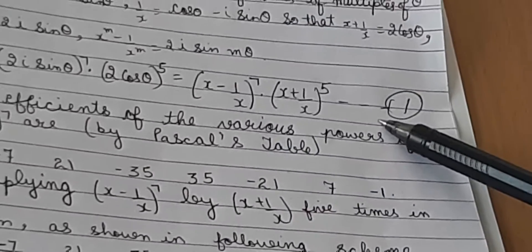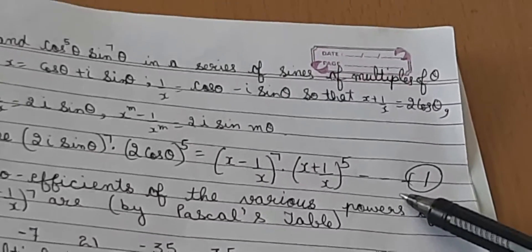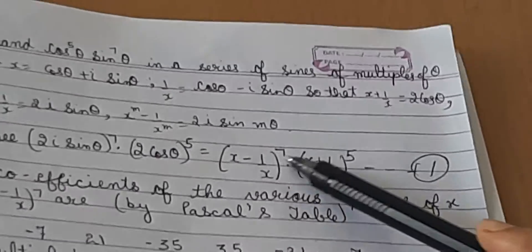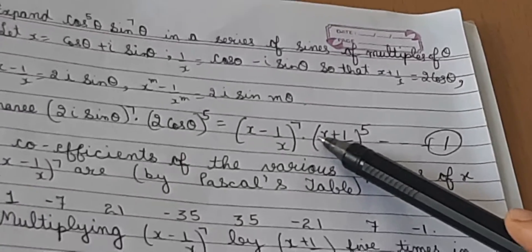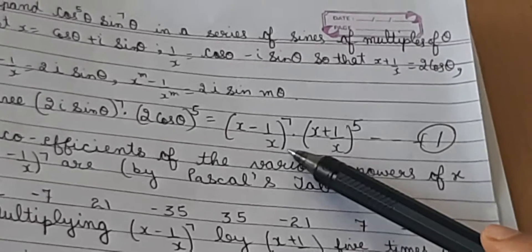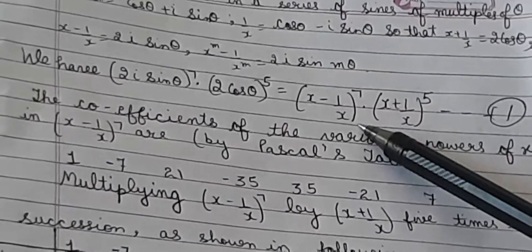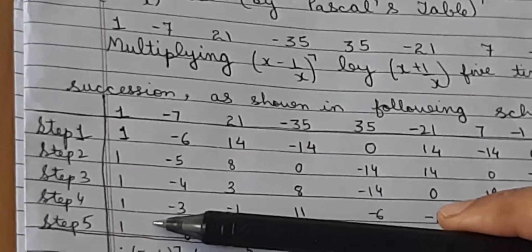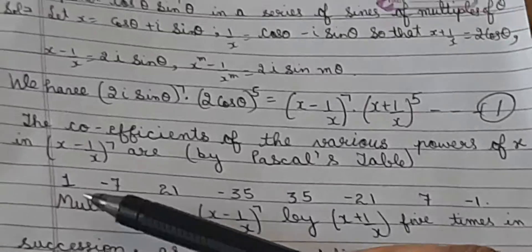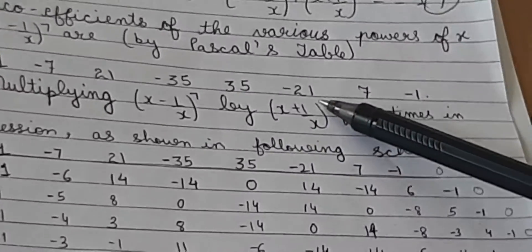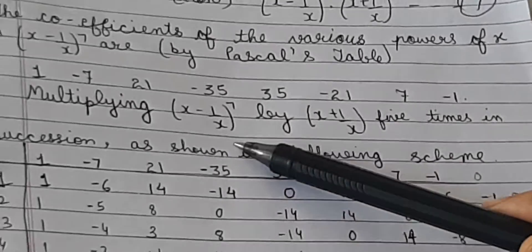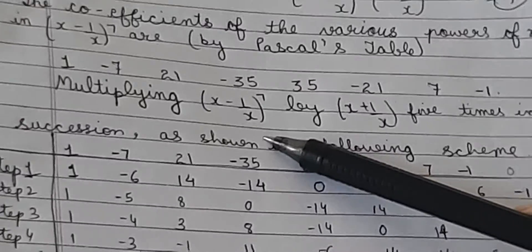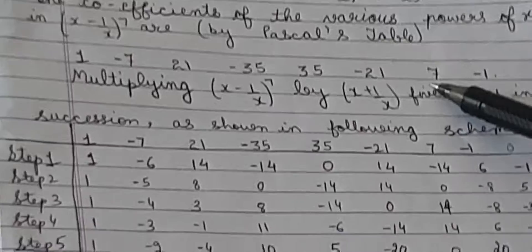We must first expand the higher power, which is 7. Using Pascal's rule, writing 1 seven times to build the triangle, the coefficients for (x − 1/x)⁷ are 1, −7, 21, −35, 35, −21, 7, −1, with alternating signs since we are expanding x − 1/x.